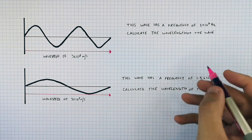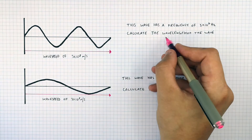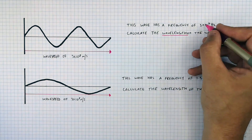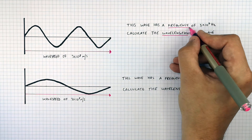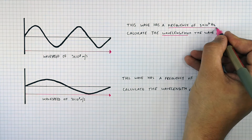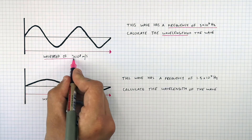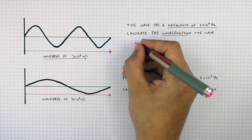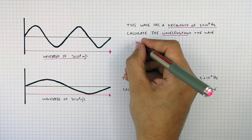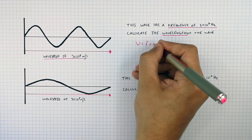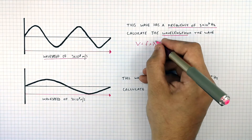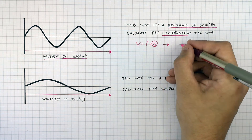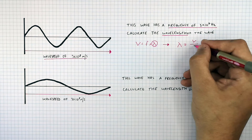The question wants you to work out the wavelength, so you need to underline wavelength. The information we have is: frequency of 3 times 10 to the power of 7 hertz, and wave speed of 3 times 10 to the power of 8 metres per second — so wavelength, frequency, and wave speed. Recall the equation: V equals f times lambda, then rearrange for wavelength lambda, giving wavelength equals V over f.